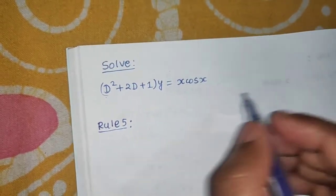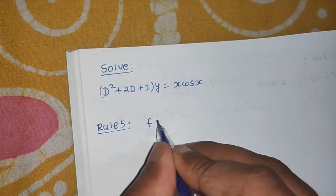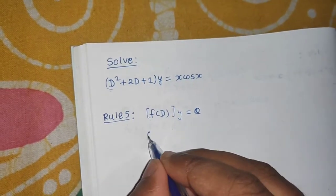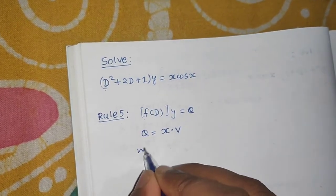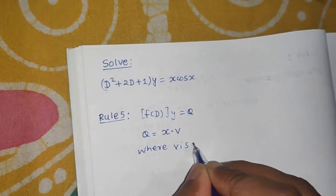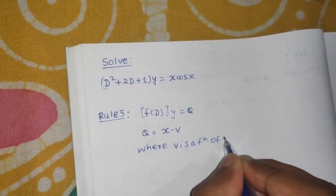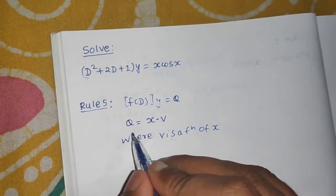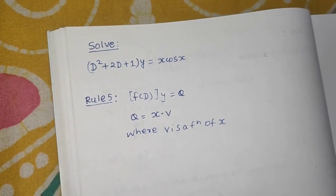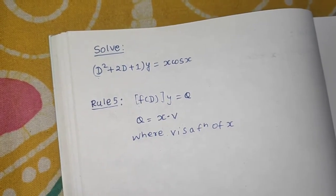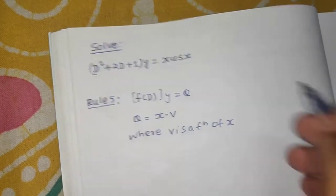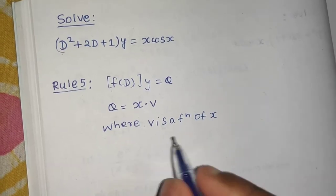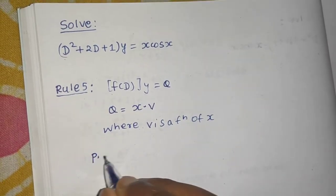First, let's understand the concept of Rule 5. A linear differential equation with constant coefficients looks like f(D)y = Q. In this case, Q is x times v, where v is a function of x — most probably other than e^(ax), because if v is e^(ax) we can use the rules studied previously, which handle Q = e^(ax) times some function of x.